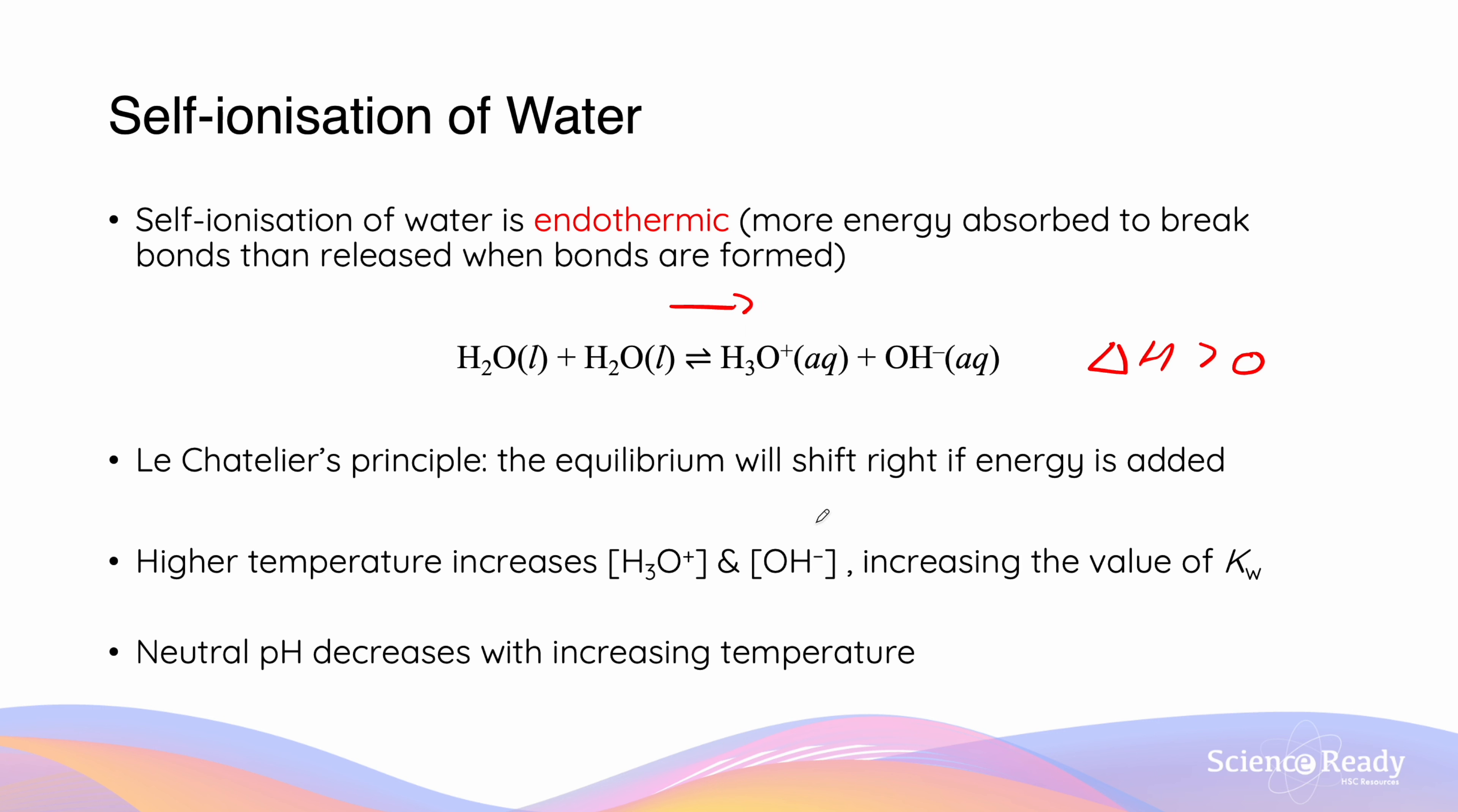Thus, if we increase the temperature, we're going to be shifting this to the right and increasing the H3O+ concentration and the OH- concentration. Kw is calculated by multiplying the concentration of H3O+ and OH-. Thus, the Kw value is going to increase as we increase the temperature. This means that neutral pH is going to decrease with an increase in temperature.